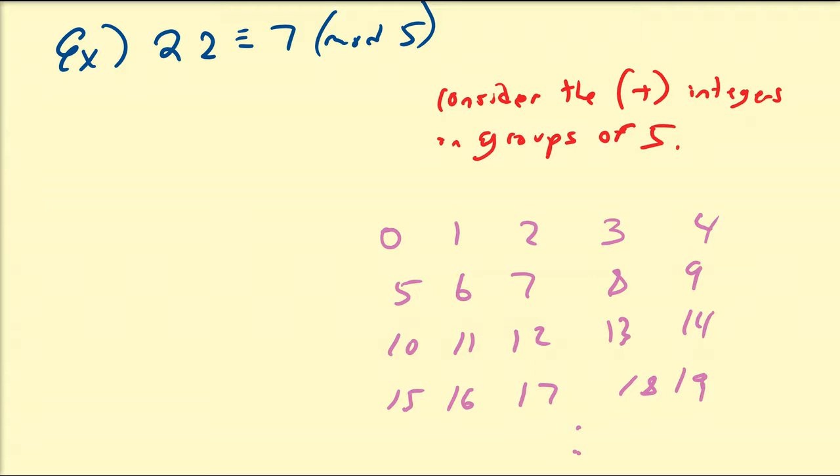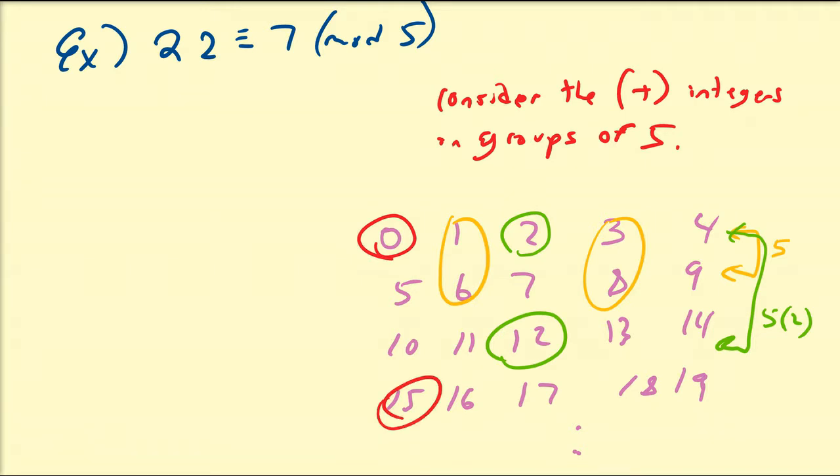So notice that if I take any two numbers, like 1 and 6, or 8 and 3, that the difference between them is just 5. But if I take any two numbers, for example 2 and 12, notice that their difference is 10, which is just 5 times 2. And if I take any numbers, such as 0 and 15, then their difference is 5 times 3, or 15. So this 5 is pretty much my modulo in a way.